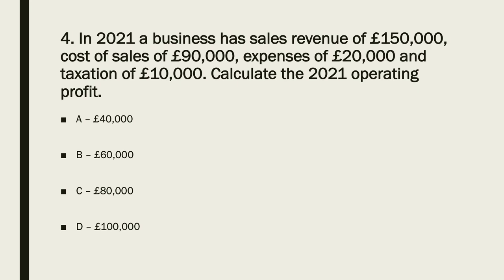Question four asks for operating profit. Operating profit = sales revenue minus cost of sales minus expenses. That means 150,000 minus 90,000 minus 20,000 equals £40,000. Don't take away taxation — you would only deduct that if the question asked for profit for the year. The answer is A: £40,000.